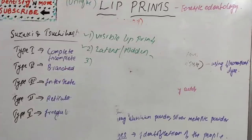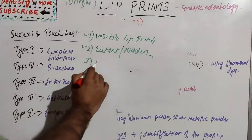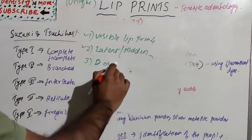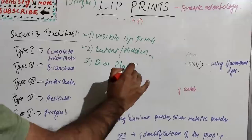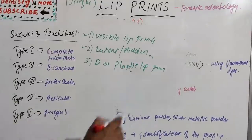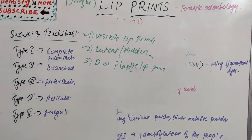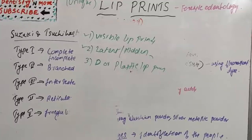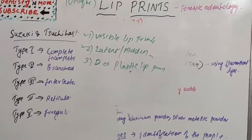The third type is plastic lip prints, sometimes denoted with a capital D. These are lip prints found on soft gel-like surfaces such as wax or butter. They are visible to the unaided eye but sometimes need development processing for photography.